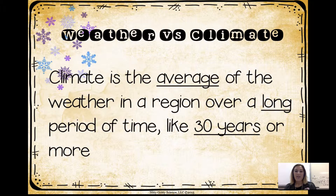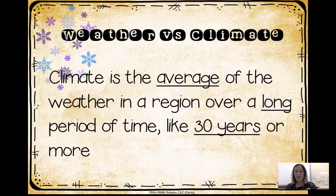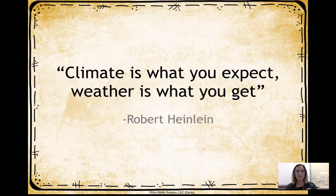Climate, however, is the average of the weather in a region over a long period of time, like 30 years or more. So we can tell generally what the climate would be like in February of next year because we can look at what past climates have been like. You will notice that over time our climate is changing, and we're going to get to that soon. Climate is what you expect, and weather is what you get.